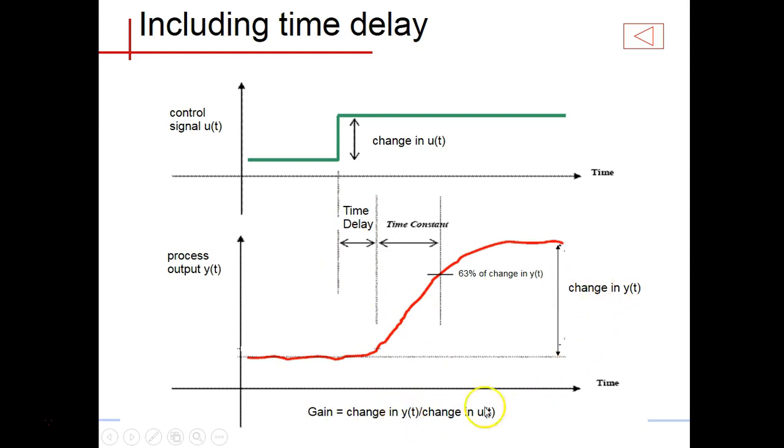The gain is the change in my output signal divided by the change in my input signal. Those are the only three parameters we have with the first order system: my steady state gain, my time constant, and my time delay. Those are the three things you need to be able to calculate for your systems.